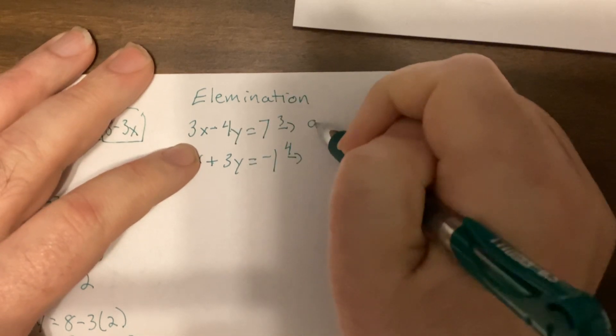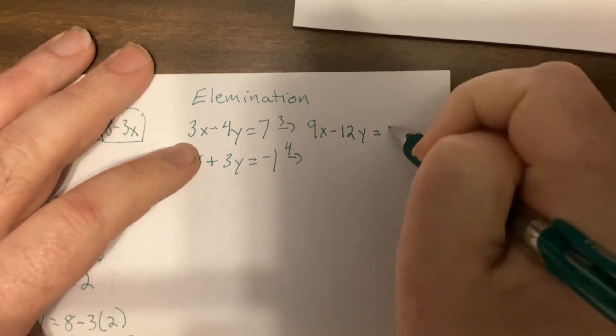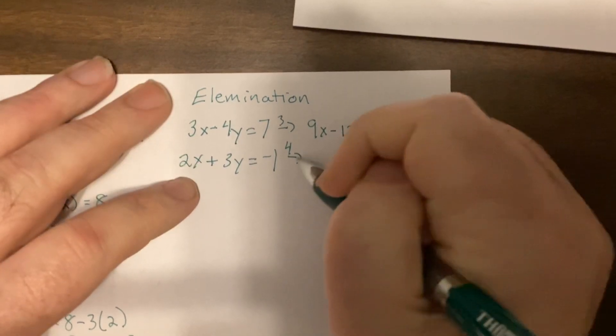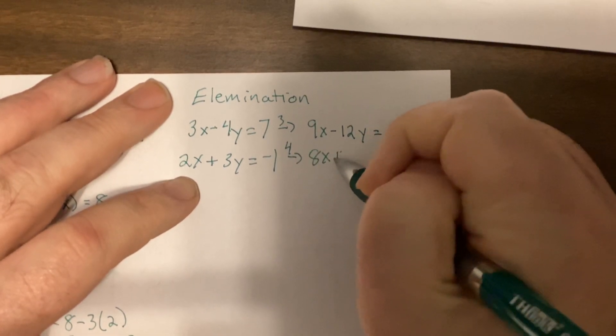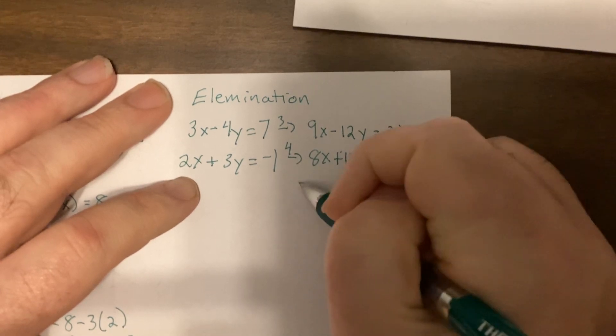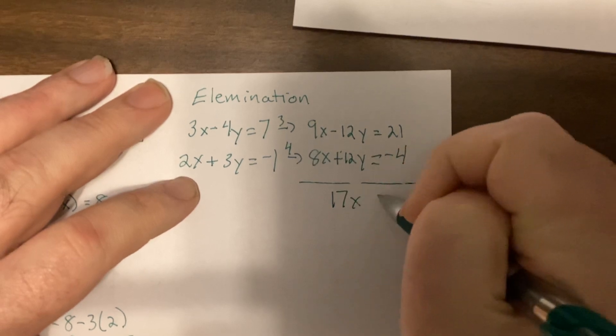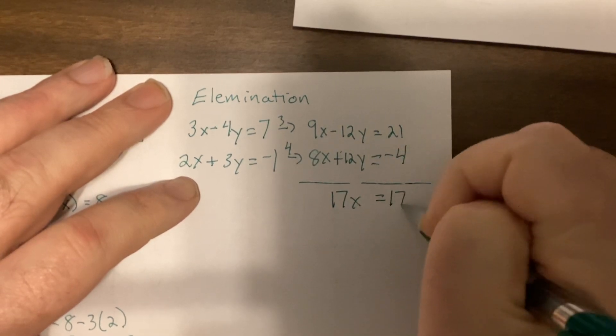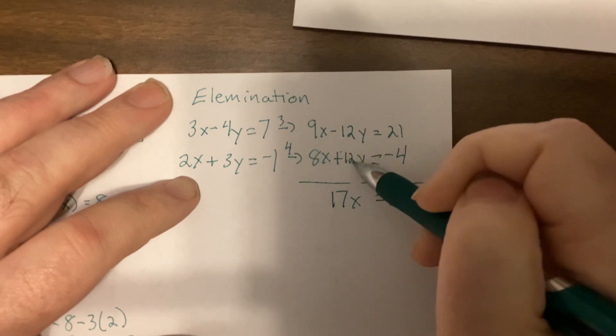So it's 9x minus 12y equals 21. Negative 4, so this would be 8x plus 12y equals negative 4. So 17x equals 17. Now notice the key is this has to be opposite: minus 12, plus 12. So when you add it's 0.